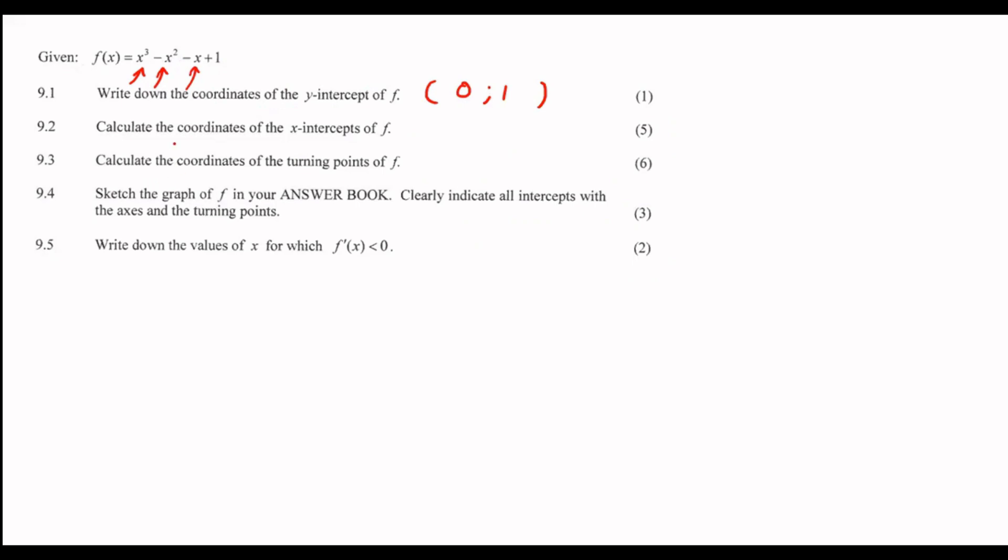Calculate the coordinates of the x-intercepts. I am aware that there are many different ways that you can do this. A lot of you guys told me about something called a block method. But this would be the time where you would want to use your block method when you're trying to find the x-intercepts of a cubic equation. So to find x, you make y equal to zero. Step one, find an x-value which works.